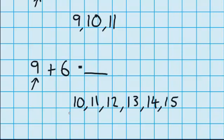And you can see if I count these up, 1, 2, 3, 4, 5, 6. I've taken those 6 jumps that I needed to. So 9 plus 6 equals 15.